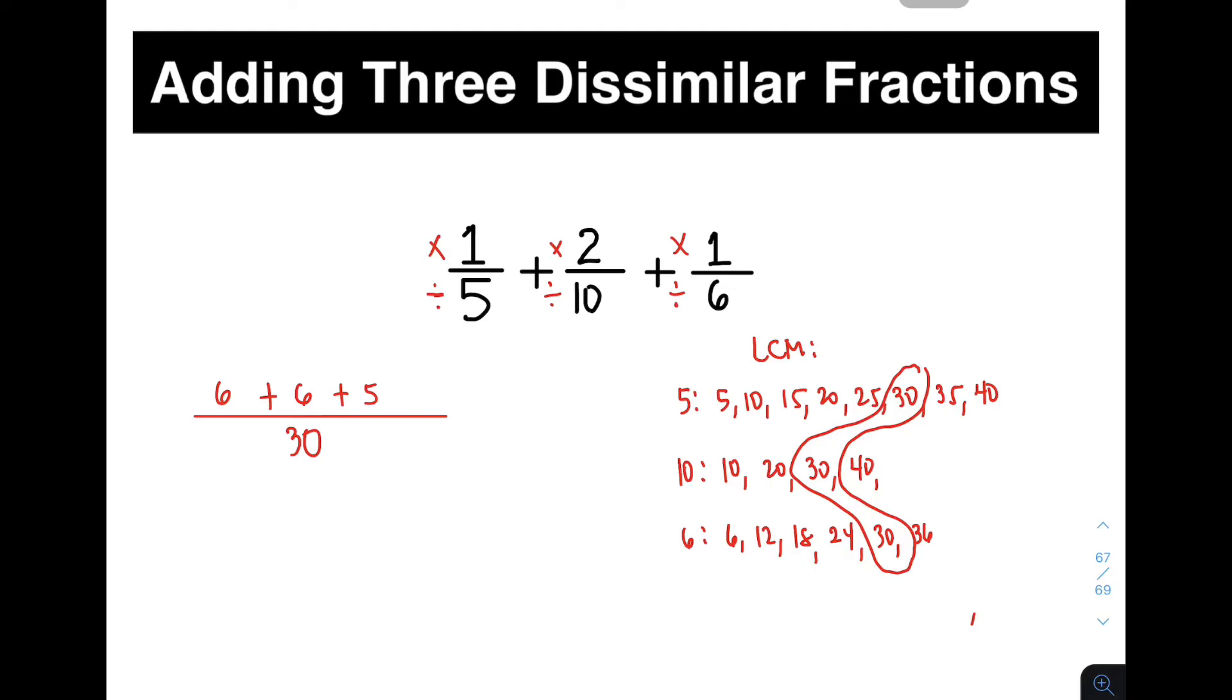And simplifying your numerator, 6 plus 6, which is 12, plus 5. This will give you 17 over 30. This is the final answer for item number 1. So guys, before declaring that as your final answer, you need to check whether you can still simplify or express your final answer in lowest terms. That's it for item number 1.